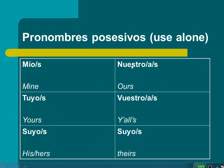Nuestro, or nuestra, or nuestros, or nuestras — you have four options here — are ours, whether you're talking about singular things, which would be nuestro or nuestra, or plural things, which would be nuestros and nuestras.